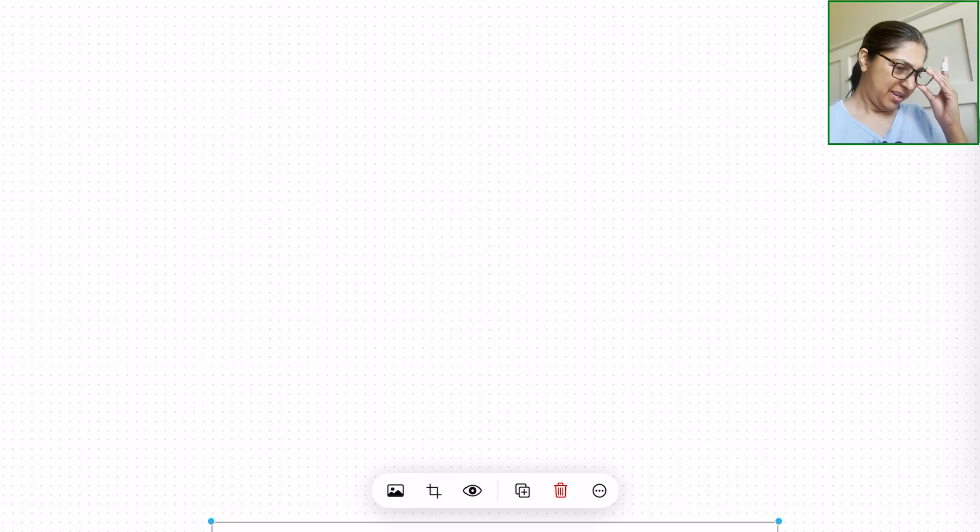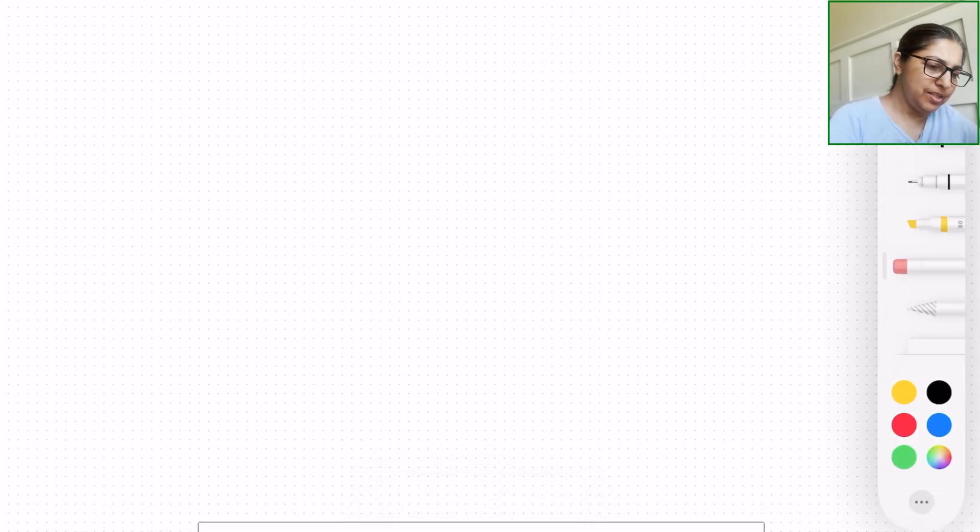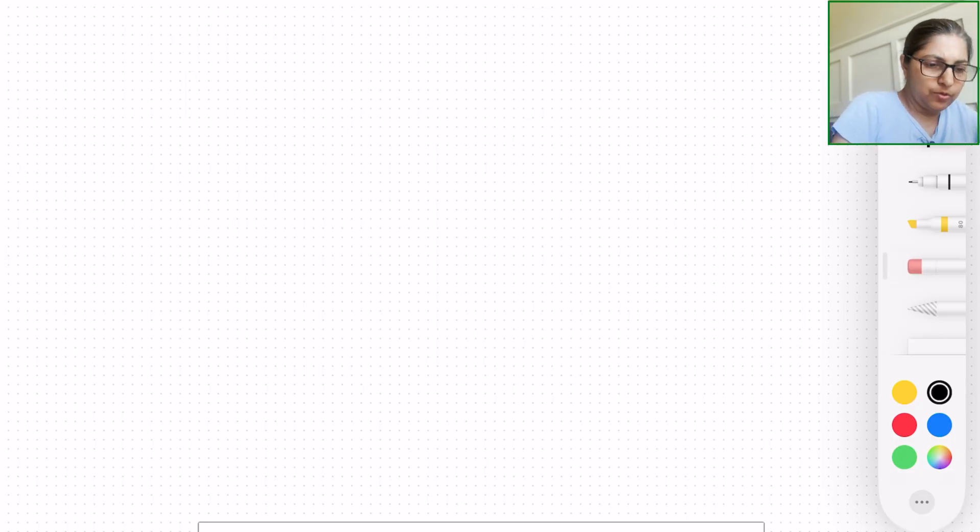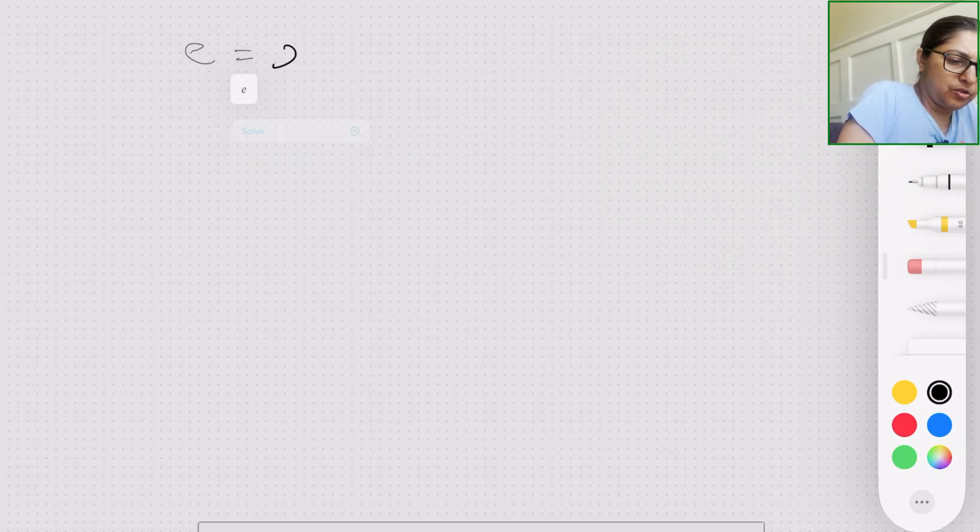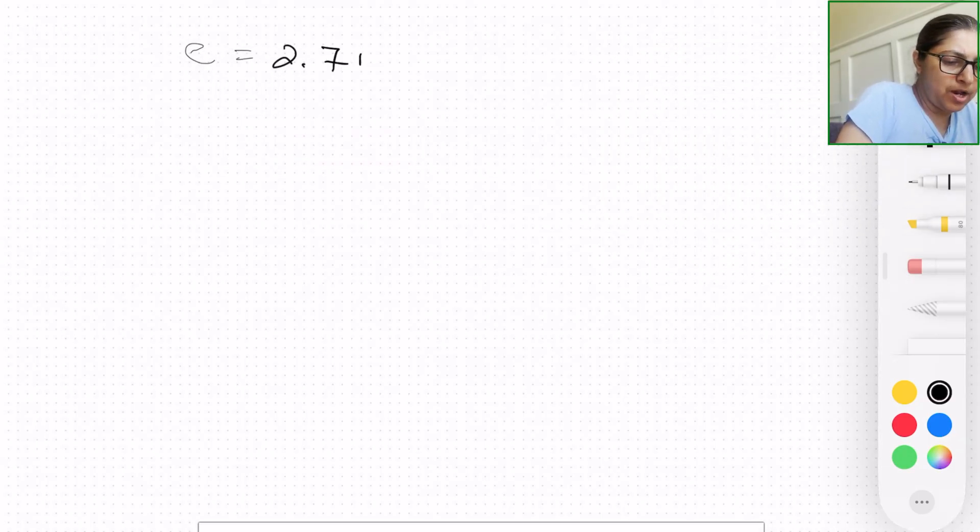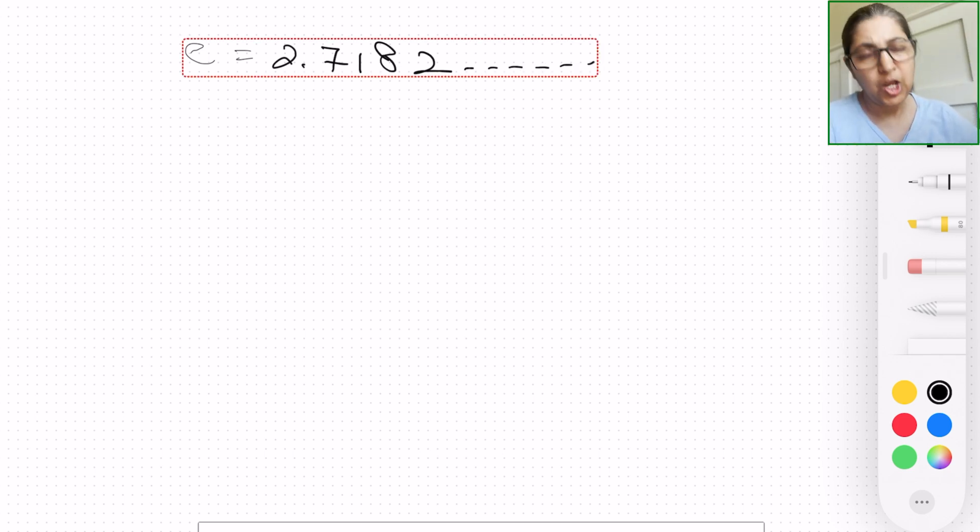Alright, let's go ahead and get started. What we are going to understand is where is this value of e coming from. So of course if you key in the number on your calculator you will get something like e equal to 2.7182 and so on and so forth.